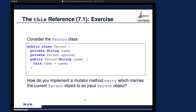Try to implement this yourself without looking at the solution: declare the mutator method, specify the input parameter of the right type, and implement it. You also want to consider the case where either person is not single — in which case they cannot get married before getting divorced. This method will require a more advanced use of the this keyword, which we haven't discussed previously. Pause the video and think about it.